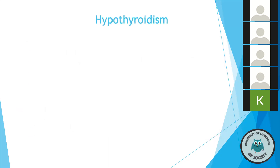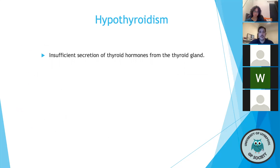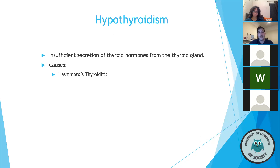Moving on to hypothyroidism — essentially flipping that scenario on its head. Hypothyroidism refers to insufficient secretion of thyroid hormones from the gland. The most common cause in the developed world is Hashimoto's thyroiditis, accounting for two-thirds of cases. It's underpinned by inflammation secondary to autoantibody attack — specifically anti-thyroid peroxidase antibodies — leading over time to chronic inflammation and even fibrosis of the gland. Iodine deficiency is the most common cause in the developing world.